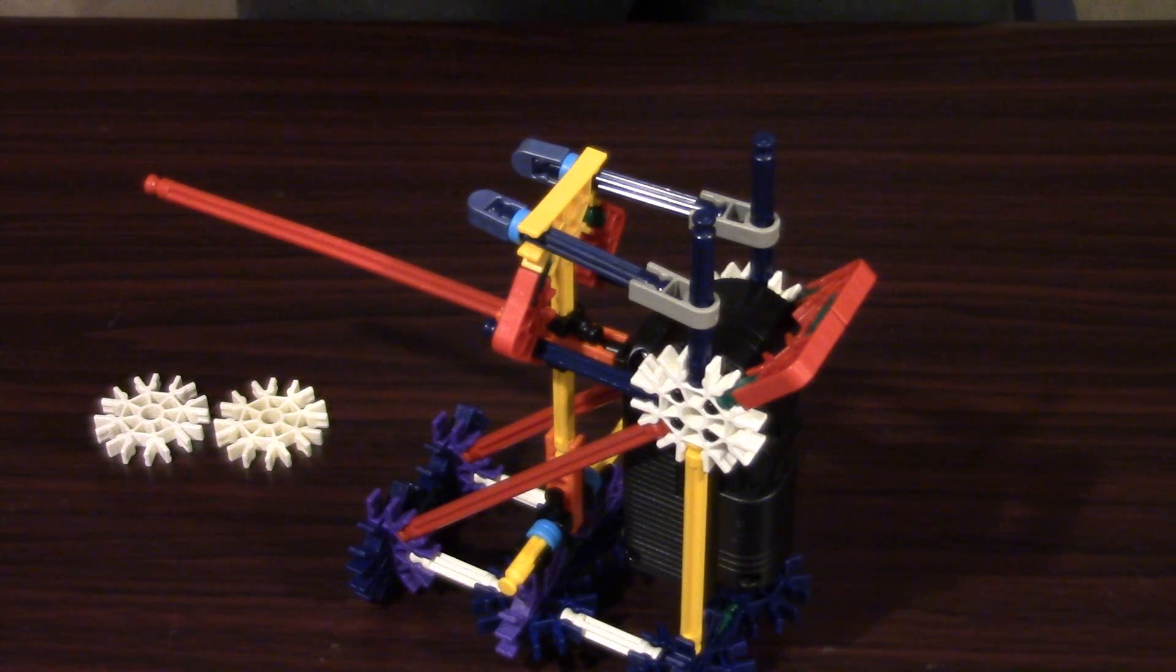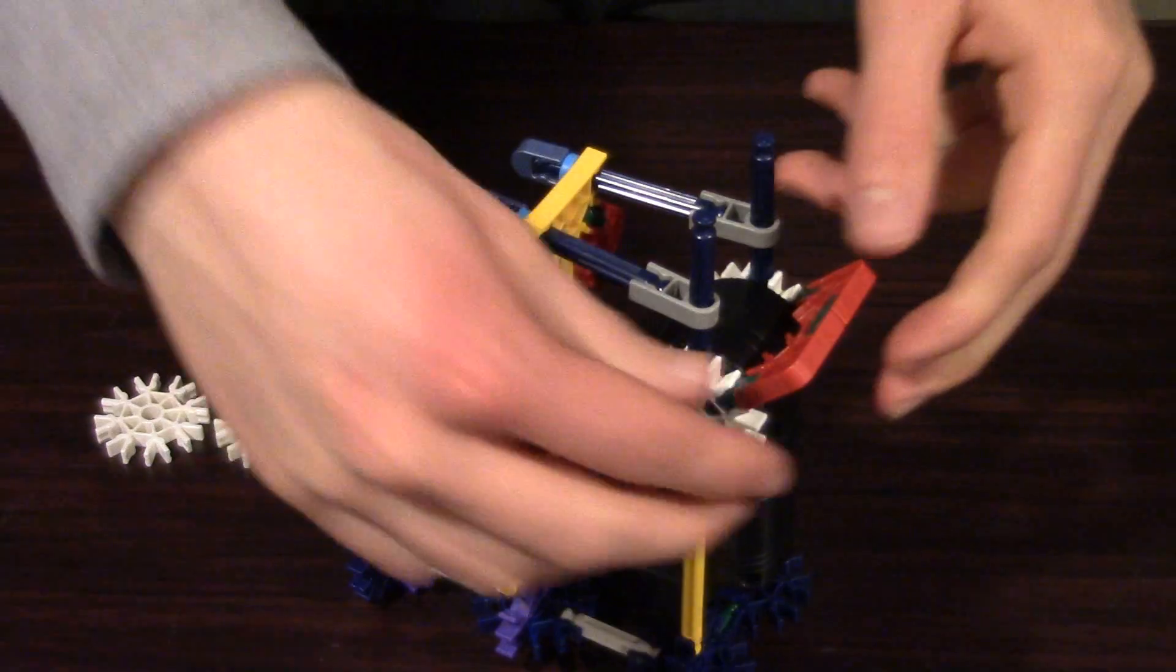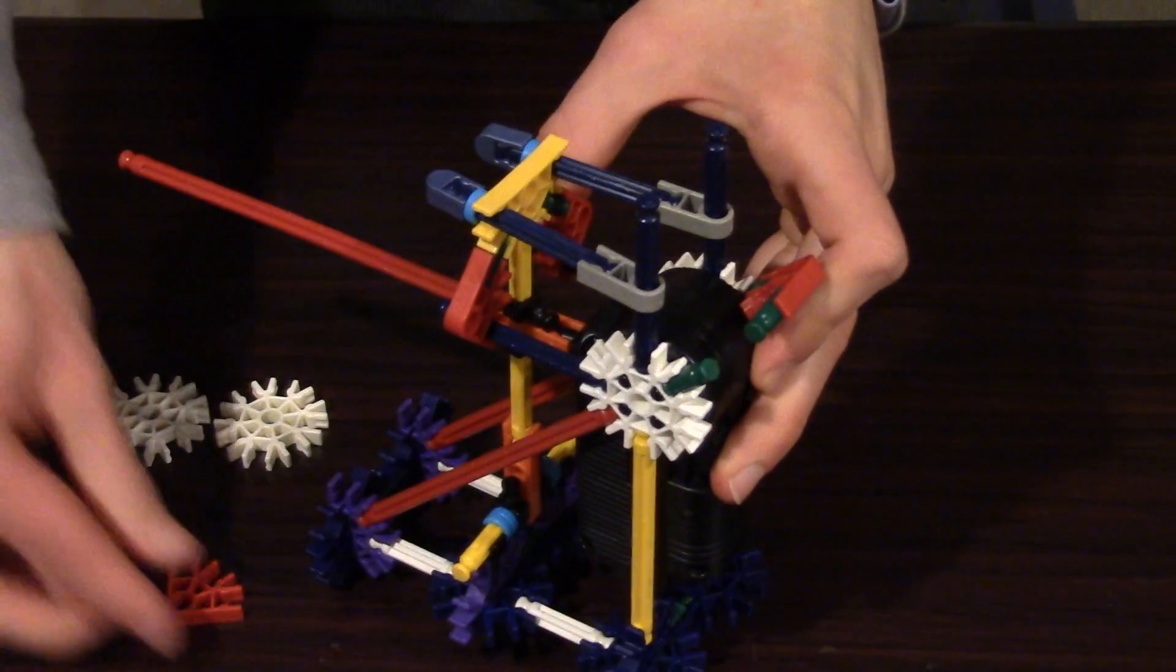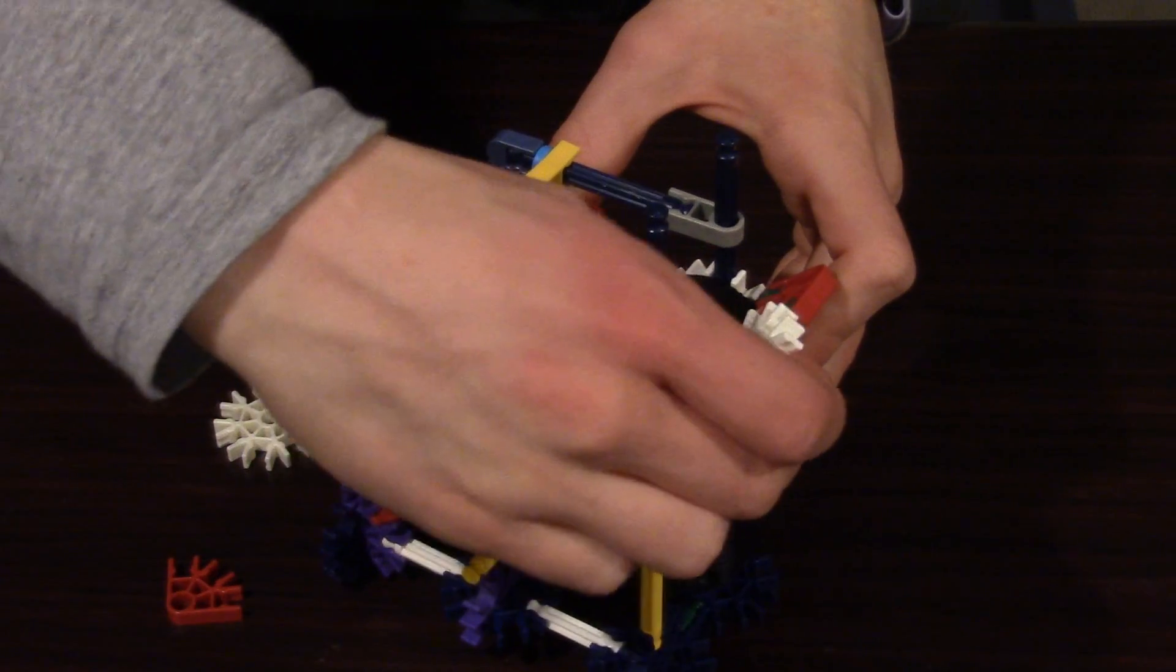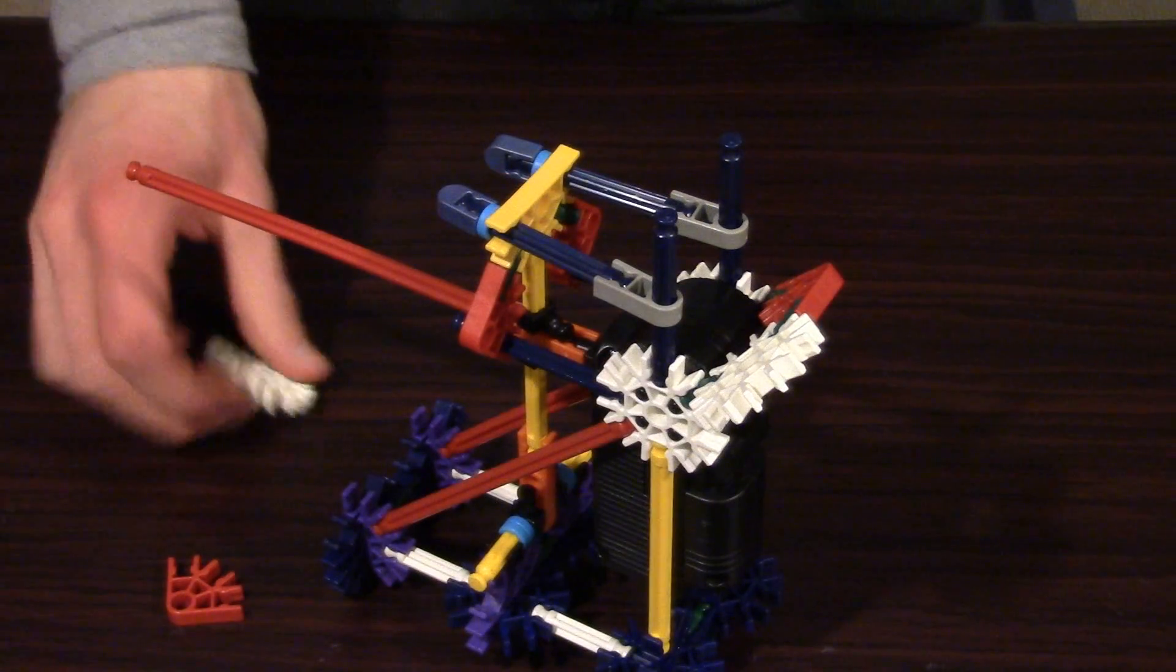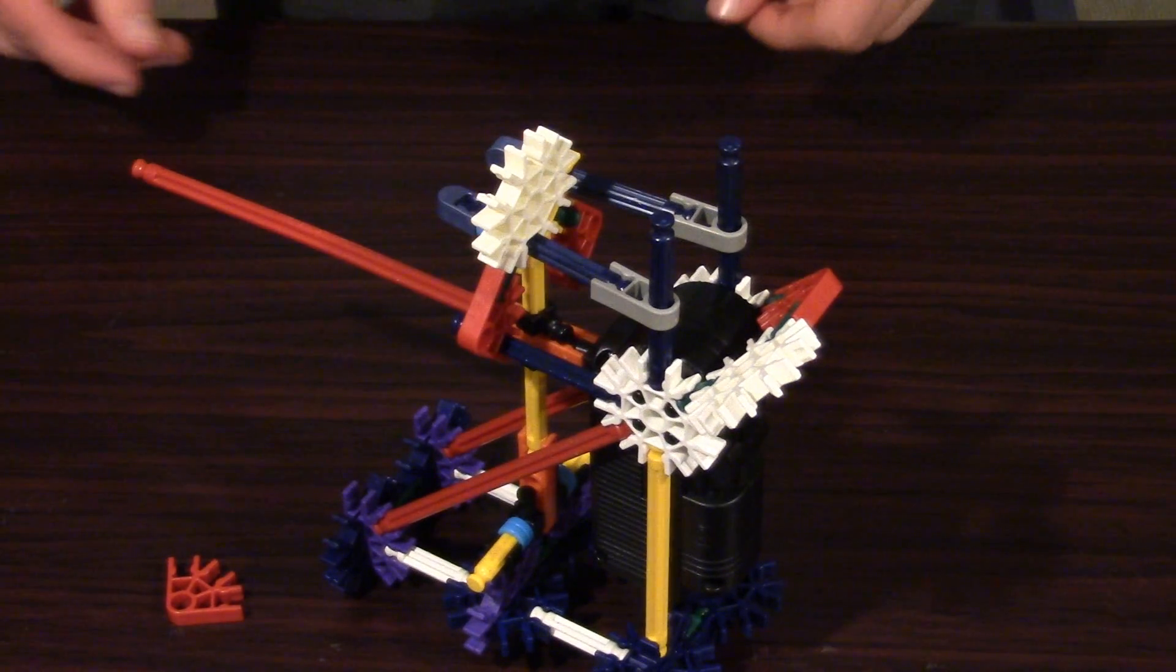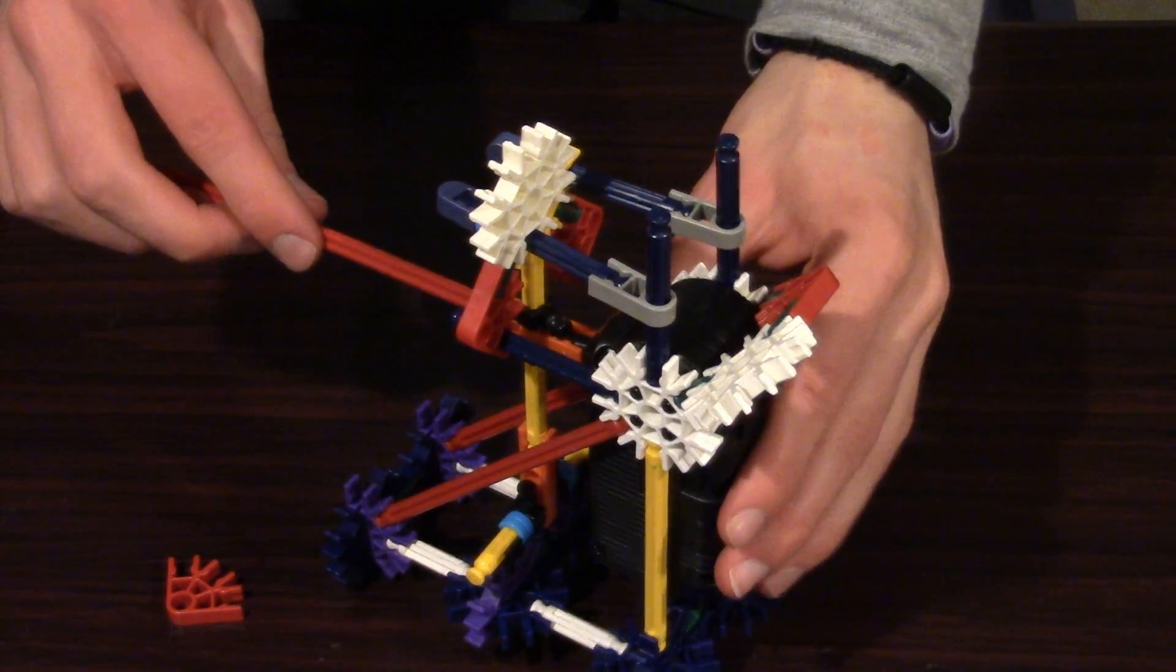To make the motor rotate perpendicular to the table, simply replace this red piece with a white piece. And add another white piece on top here. Then rotate the entire structure 90 degrees.